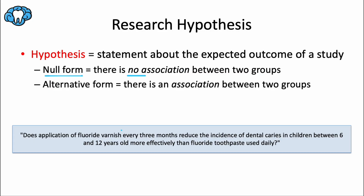Here's another research question: Does application of fluoride varnish every three months reduce the incidence of dental caries in children between 6 and 12 years old more effectively than fluoride toothpaste used daily? With regards to the null hypothesis, we would state it as follows: The application of fluoride varnish every three months does not reduce the incidence of dental caries in children aged 6 to 12 more effectively than fluoride toothpaste used daily. The null hypothesis asserts that there is no difference in the effectiveness of varnish and toothpaste in reducing dental caries within these parameters and in this specific population.